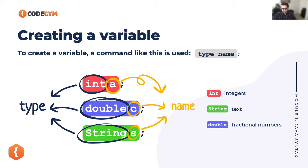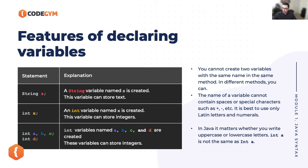So creating a variable: the first part is the type, the second part is the name, and the last part is the actual value. 'String' means literally text in Java terminology, and 'int' equals numbers — any negative or positive whole number, no fractions. To define one variable you add a semicolon at the end of the line. If you want to define multiple variables in the same line you write: 'int a, b, c' — the comma continues the statement, the semicolon ends the line.